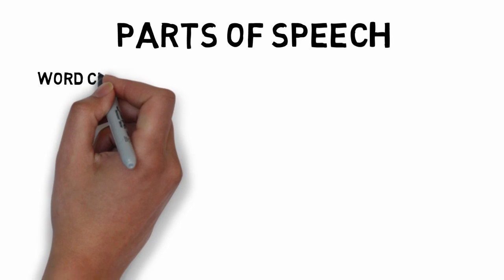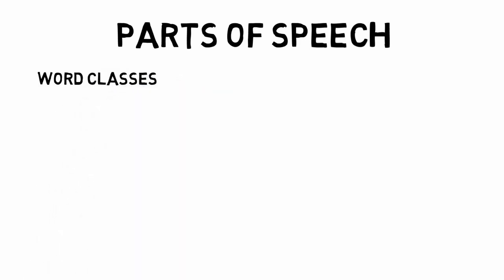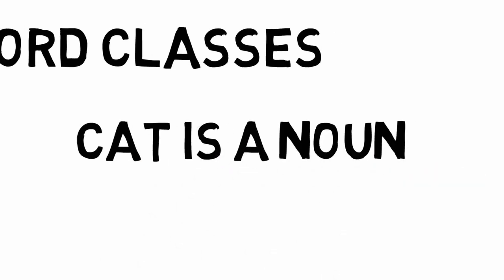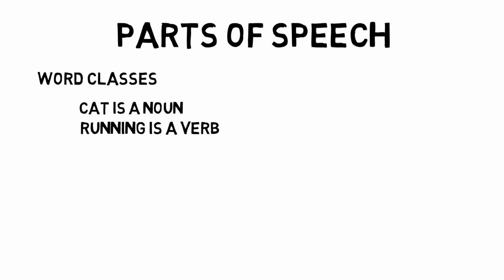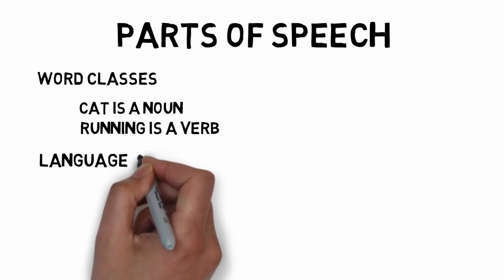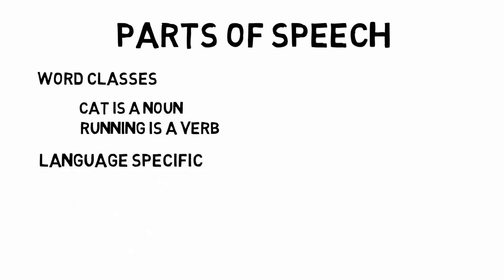Starting with parts of speech, let's define the term. A part of speech is the word class that a word occupies. For example, in English, the word 'cat' is a noun and 'running' is a verb. Word classes are language-specific — not all languages have the same word classes, and just because a word is in one class in one language doesn't mean it is in that class in all languages.